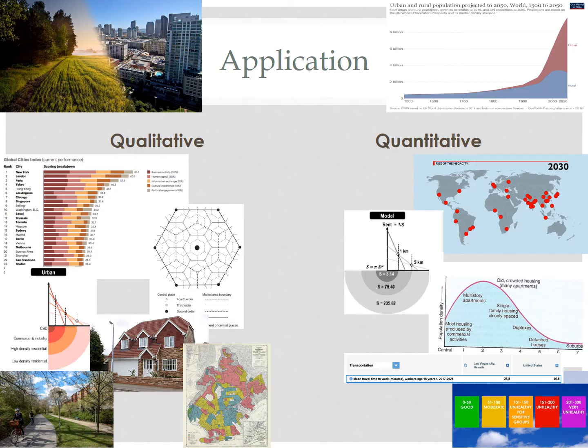What I'm going to attempt to do is connect every standard in Unit 6 — our Cities and Urban Land Use unit, including the ones we haven't specifically lectured on yet — back to data that might inform decision makers and residents. That data might be quantitative or qualitative, or may include examples of both. Hopefully, this will provide some context that will make it easier for us to understand how urban data is used and why it's so important.